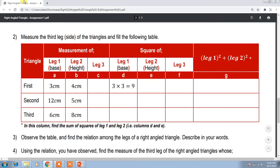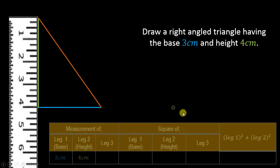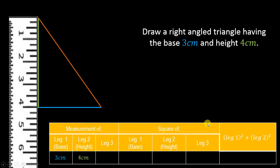Now we will fill out the table. This is our table which we have to fill out. There are three columns for measurements: measurement of Leg 1, which is the base; measurement of Leg 2, which is the height; and measurement of Leg 3, which is the third leg. Leg 1 is the measurement of the base.